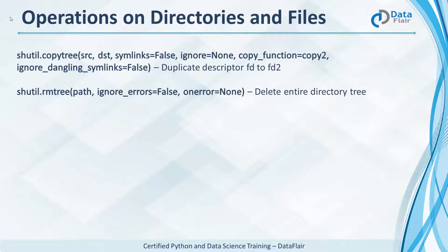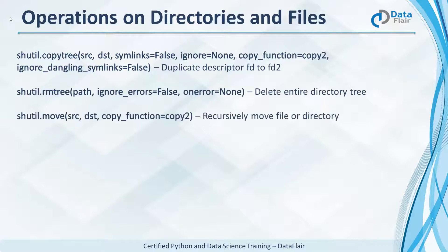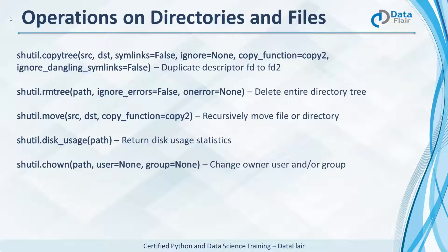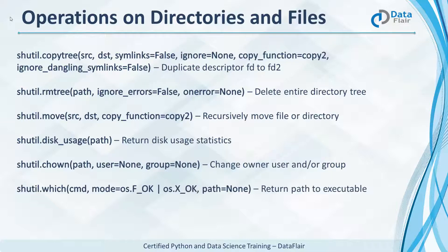rmtree deletes an entire directory tree. move recursively moves a file or directory. disk_usage gives us statistics about the disk usage for a given path — this is a named tuple. chown helps change the owner user and/or group of a specified path. which gives us the path to an executable.